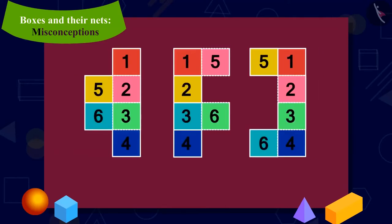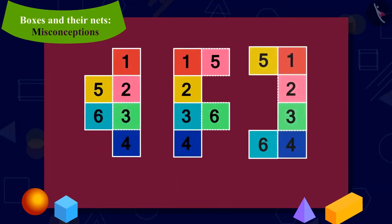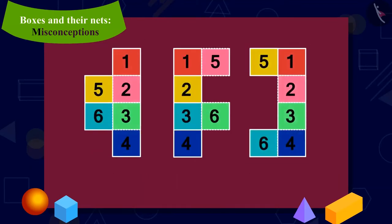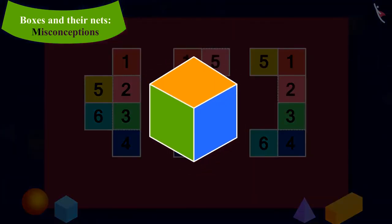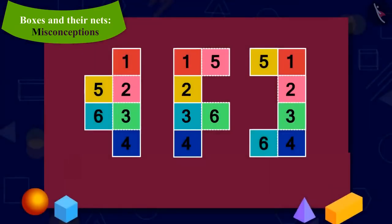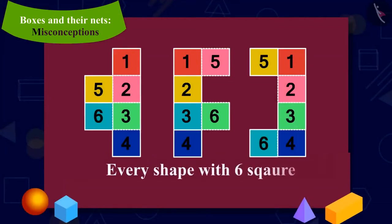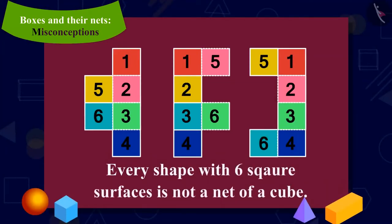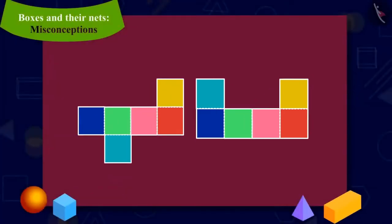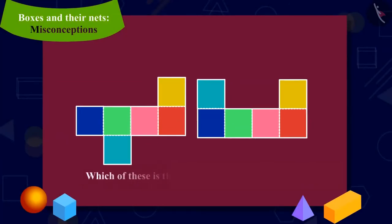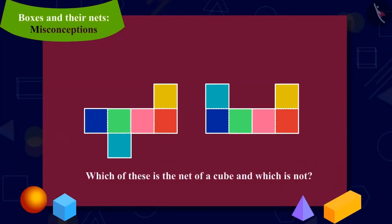Yes, kids, it is possible to have more such nets which have six square surfaces, but by folding them, we cannot make a cube. In other words, every shape with six square faces is not a net of a cube. Children, now can you tell which of these shapes is the net of a cube and which is not? If you want, you can stop the video and find the answer.